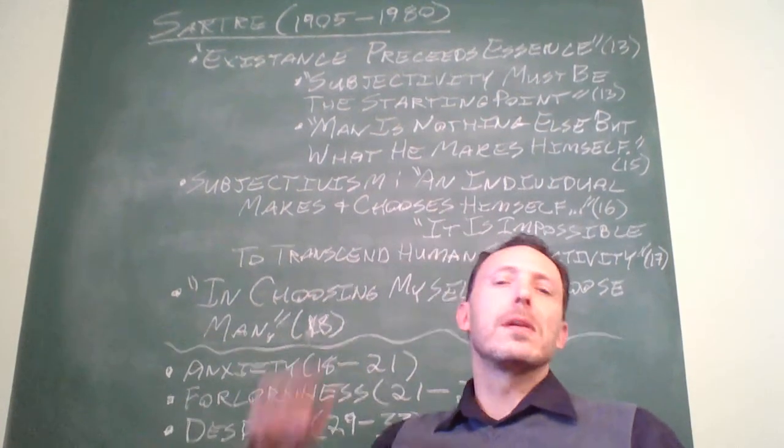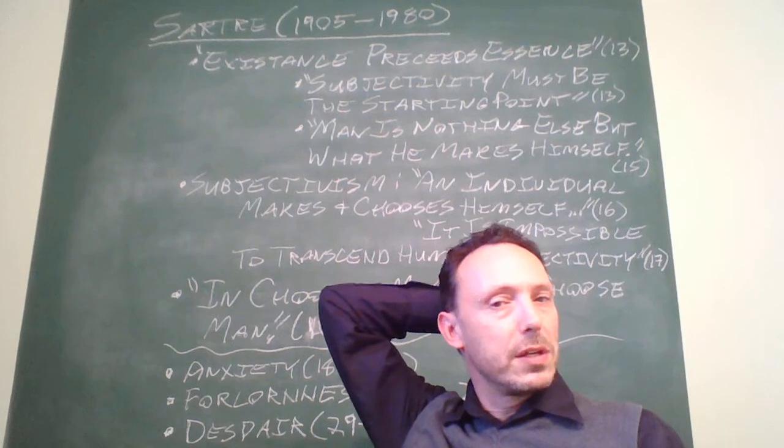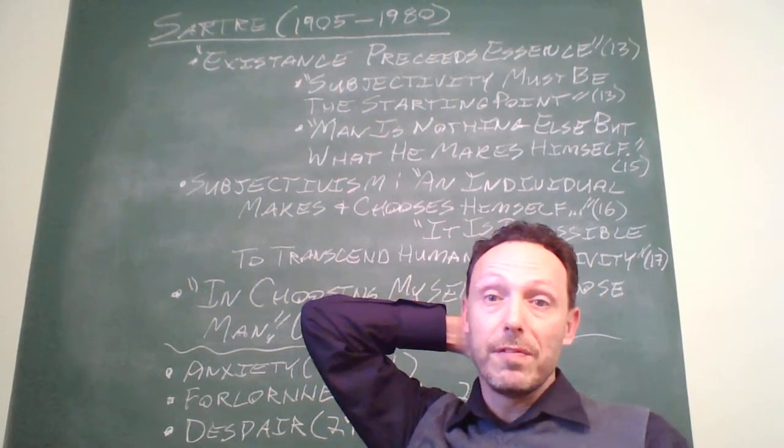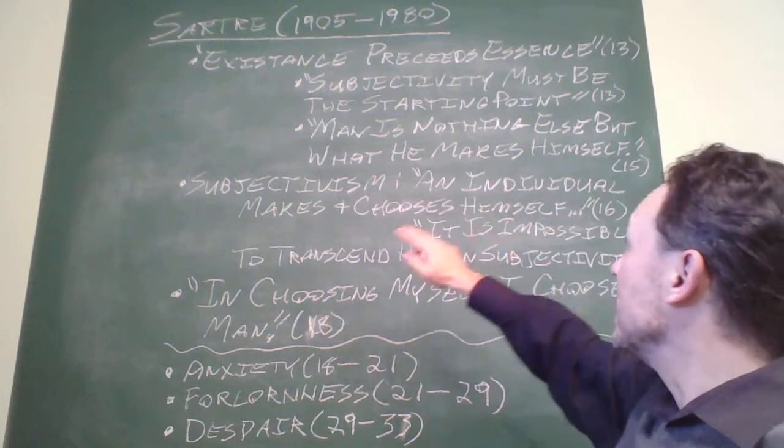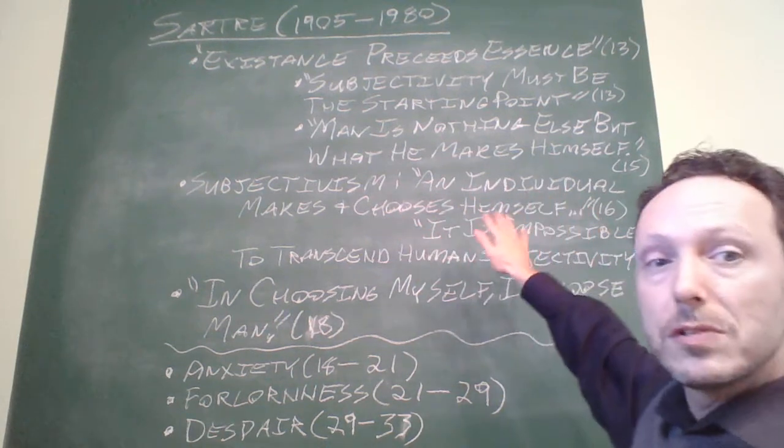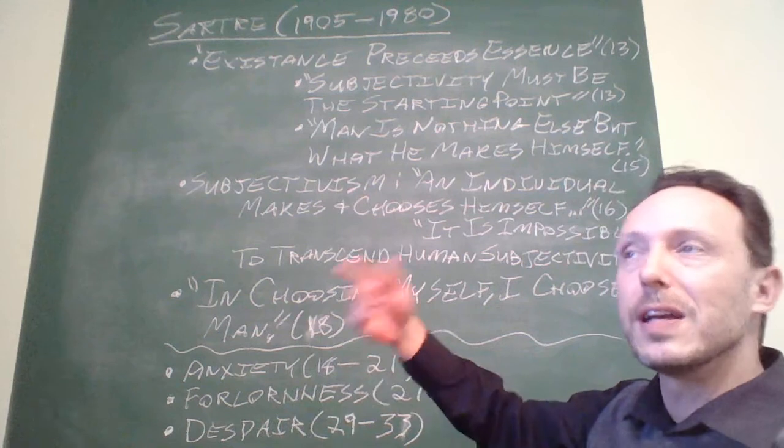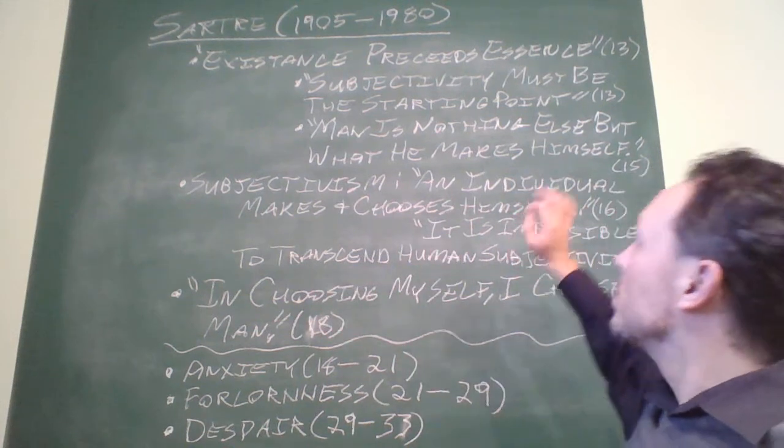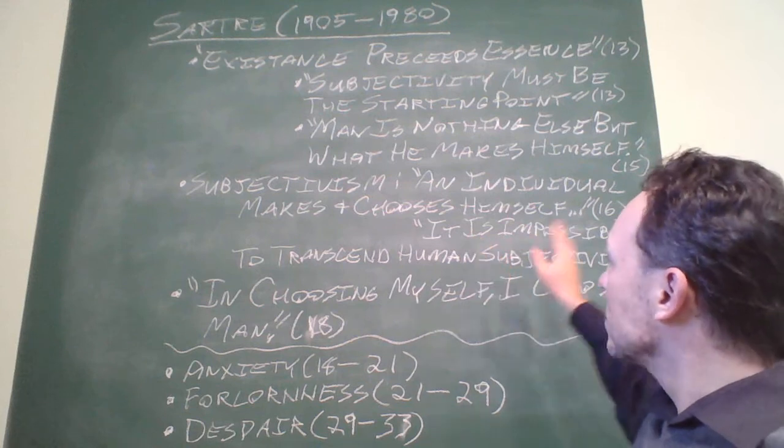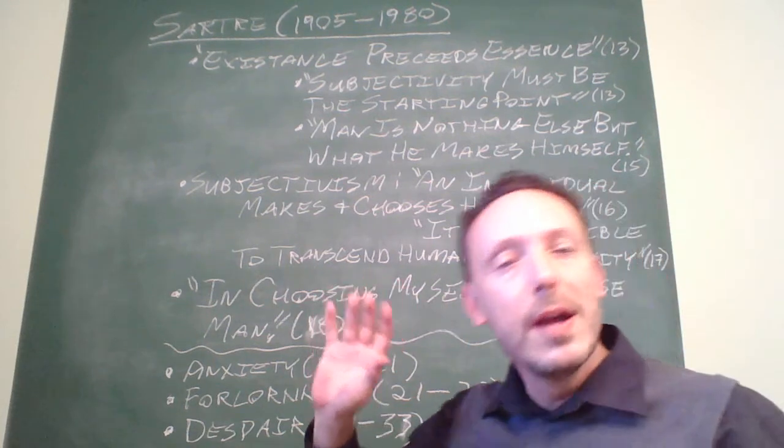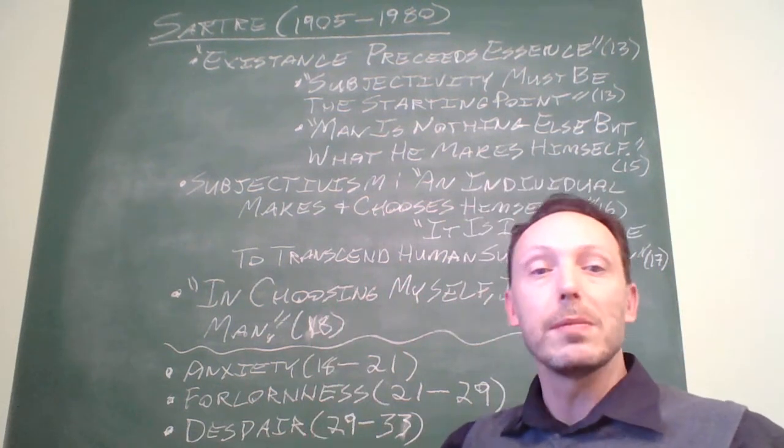You see, essentially what Sartre is claiming with regard to the second meaning of subjectivity and subjectivism both really apply. The individual makes and chooses himself. This is fine. We're all unique and beautiful flowers and that sort of thing. But nonetheless, more prevalently what Sartre wants to assert is that it's impossible for human beings to transcend human subjectivity.